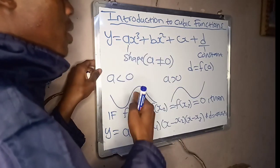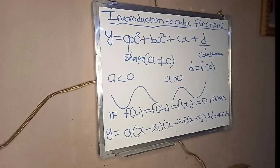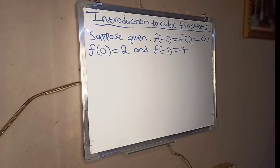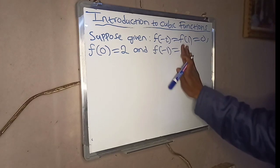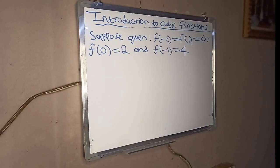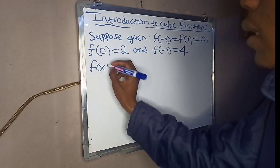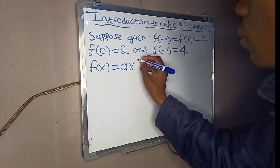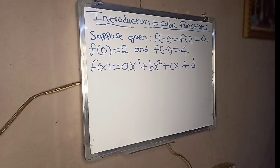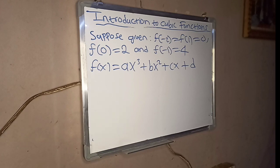Let's consider an example. Suppose you are given: f(negative 2) equals zero, f(1) equals zero, f(0) equals two, and f(negative 1) equals four. You are asked to find the standard form of this cubic function. Remember f(x) equals ax cubed plus bx squared plus cx plus d, so we need to solve for the values of a, b, c, and d.